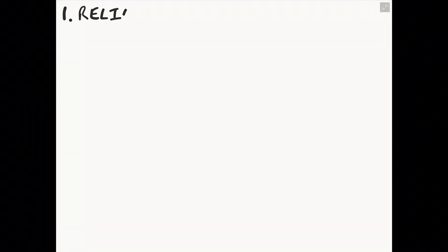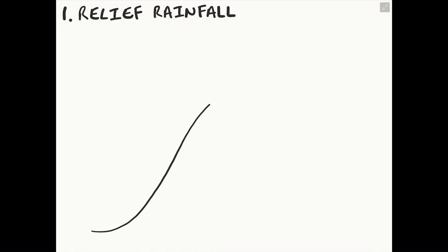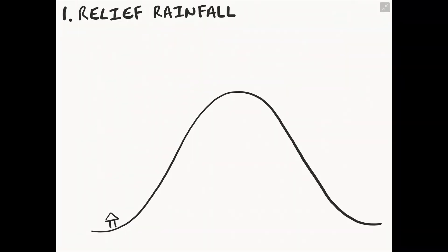Our first type of rainfall we are going to look at is called relief rainfall. Relief rainfall means the shape of the land. In this example, we are going to have a mountain range with Southport on the west coast of the mountain. The centre of our mountain will be called the Pennines, as the Pennines run through the spine of the UK.